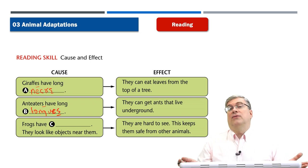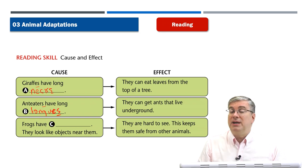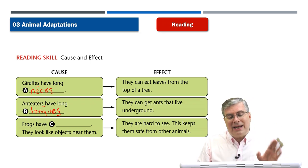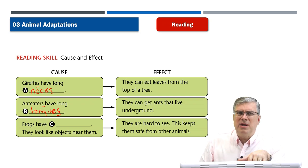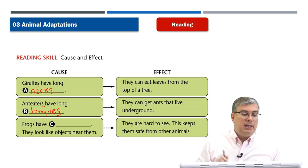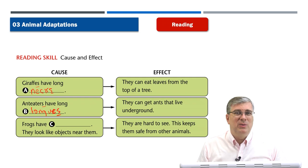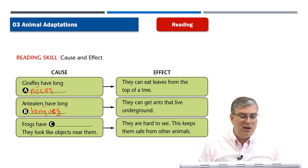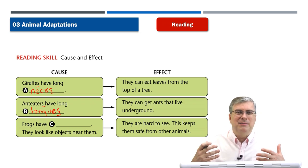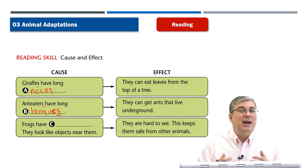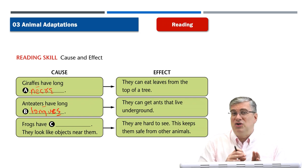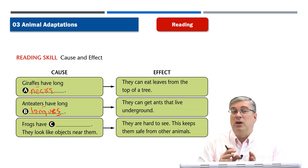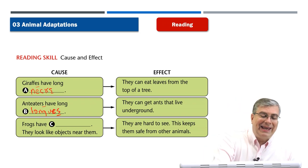Next, frogs have what? We could say tongues, but the next sentence says they look like objects near them. Tongues don't help frogs look like the objects around them — so what does? Remember that really difficult word from the vocabulary? It lets them look like their surroundings. We talked about the octopus, and we saw the ptarmigan — the bird that changes the color of its feathers over time. What do we call that?